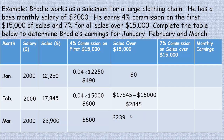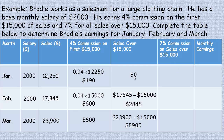For March, we take twenty three thousand nine hundred and subtract fifteen thousand, giving eight thousand nine hundred at the higher rate. Now we calculate those percentages.